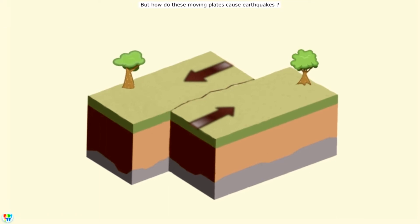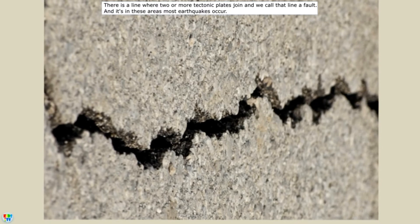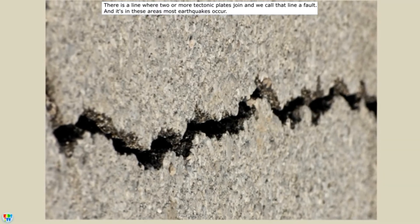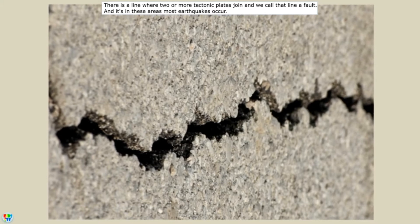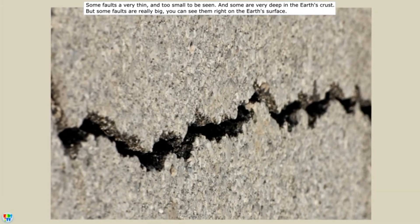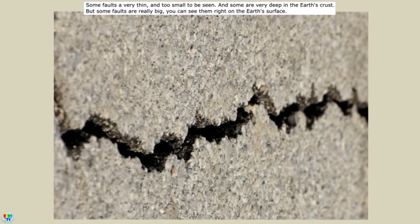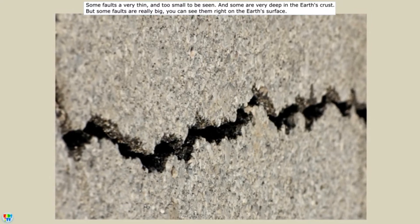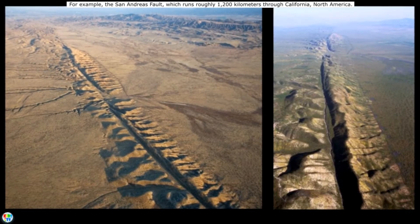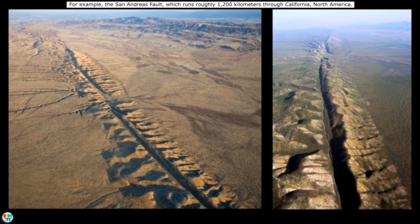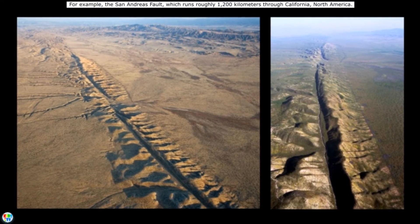But how do these moving plates cause earthquakes? There is a line where two or more tectonic plates join, and we call that line a fault. And it's in these areas most earthquakes occur. Some faults are very thin and too small to be seen, and some are very deep in the earth's crust. But some faults are really big — you can see them right on the earth's surface. For example, the San Andreas Fault, which runs roughly 1,200 kilometers through California, North America.